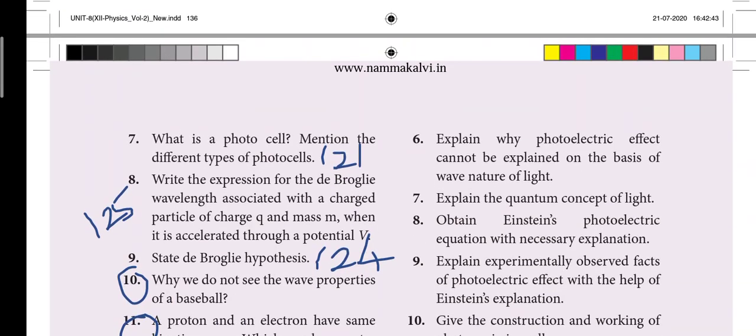Seventh question: what is photocell, mention the different types of photocell, page 121. Eighth question: write the expression for De Broglie wavelength associated with the charge, so on page 125. Ninth question: state De Broglie hypothesis, page 124.